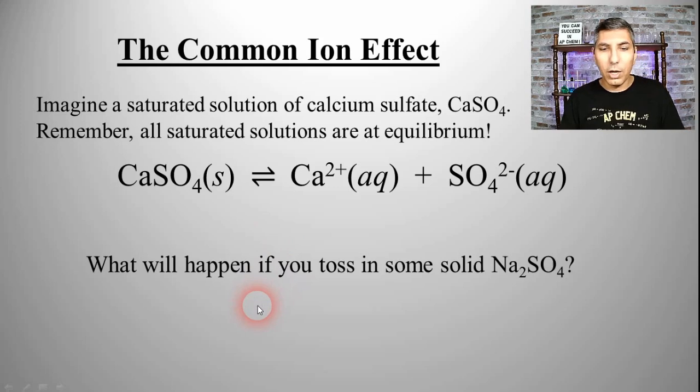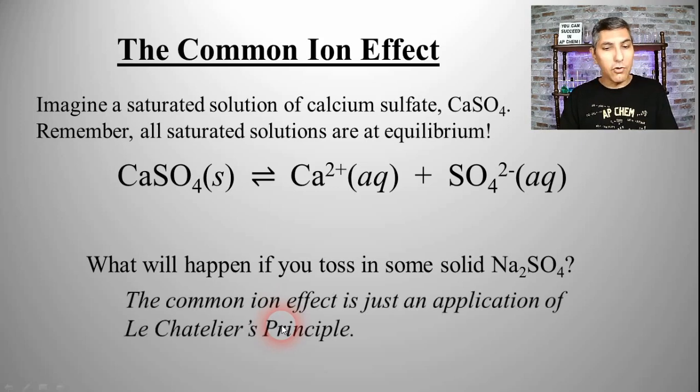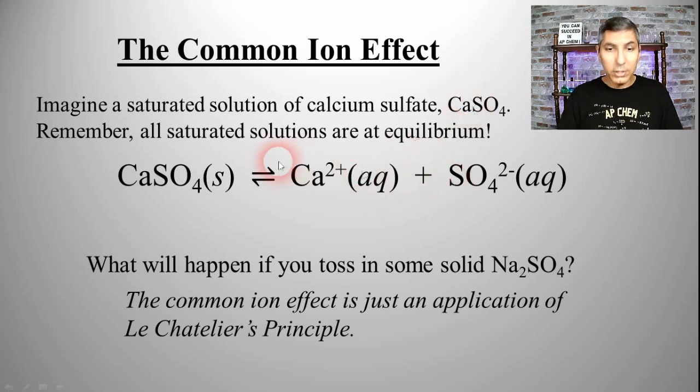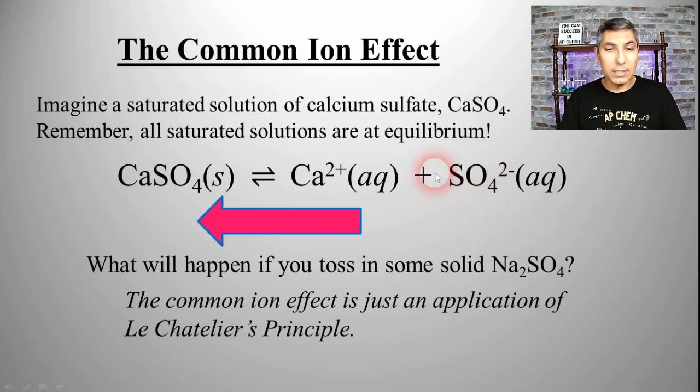What's going to happen if we toss in some solid sodium sulfate, Na2SO4? We know that this is kind of an application of Le Chatelier's principle. Sodium sulfate is going to dissociate into its ions, and some of that sulfate is going to disturb this equilibrium. If we add in sulfate, in fact any product, it's going to force the equilibrium to go in the opposite direction. In this case, it's going to shift toward the reactant side.